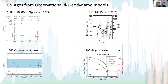If we look at the most recent models to predict age estimates, we have observational-based models on the left and geodynamo models on the right. We can see that the age estimates span more than 500 million years but they all fall in or around the Neoproterozoic era.